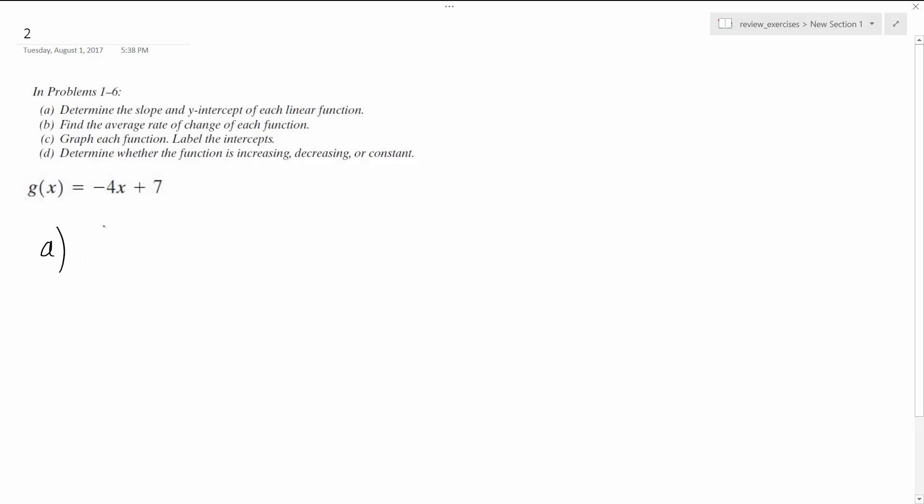So for the first part, slope and y-intercept, in this case you just look at the coefficient in front of x for the slope. So m, or slope, is equal to negative 4.